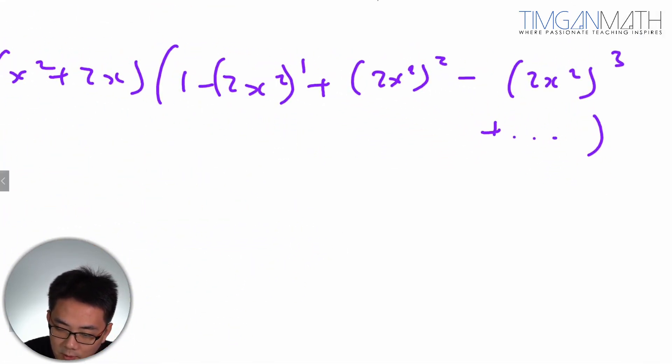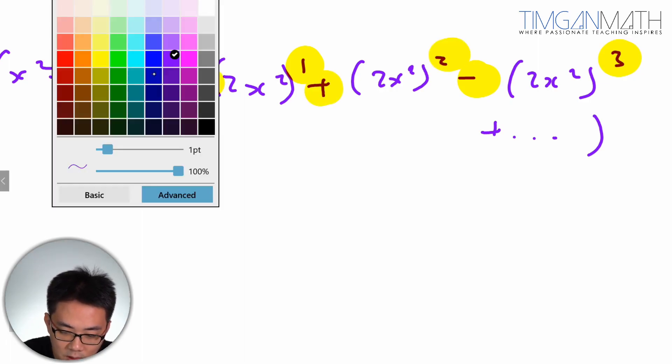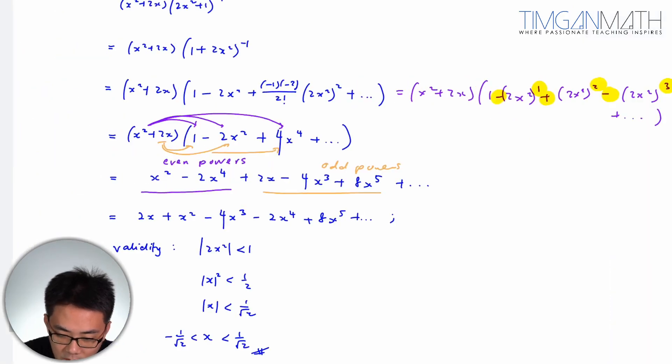You realize that for each odd is a negative, and for each even is a positive in front. This is the simplest way to do it.